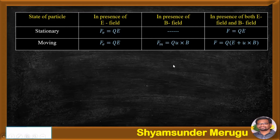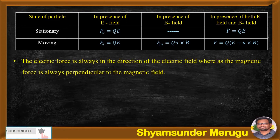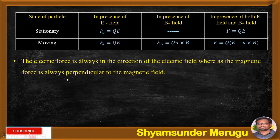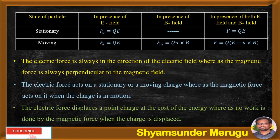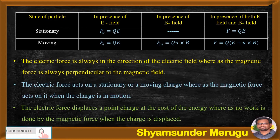Let us also see certain things related to the force on a moving charge in the case of electric field as well as magnetic field. The electric force is always in the direction of the electric field, whereas the magnetic force is always perpendicular to the magnetic field. The electric force acts on a stationary or a moving charge, whereas the magnetic force acts only when the charge is in motion. The electric force displaces a point charge at the cost of energy, whereas no work is done by the magnetic force when the charge is displaced.